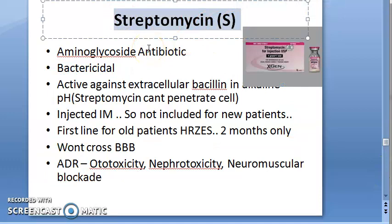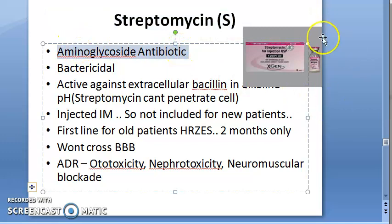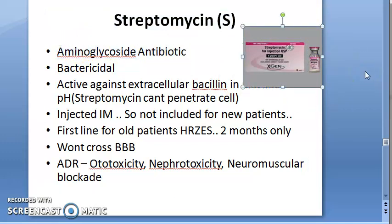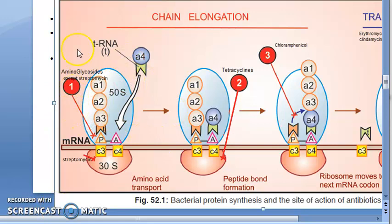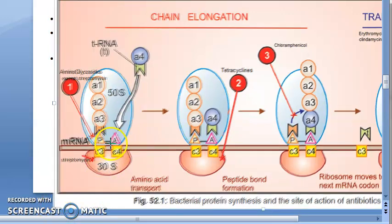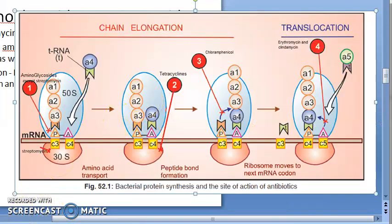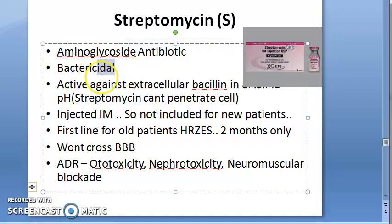Now moving to streptomycin, represented as S. Streptomycin is an aminoglycoside antibiotic. It binds to the 30S ribosomal subunit, inhibiting the initiation of protein synthesis — as we know from previous videos on aminoglycosides. Streptomycin is bactericidal — the only bacteriostatic drug among these was ethambutol.